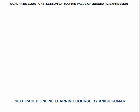Hello, this is quadratic equation lesson 2.1. In this I will continue with minimum or maximum value of quadratic expression. In this lesson I will discuss the general formula to calculate maximum or minimum value of quadratic expression. So let me write a general quadratic expression: ax² + bx + c. Now I will find how to find the maximum or minimum value of this quadratic expression.